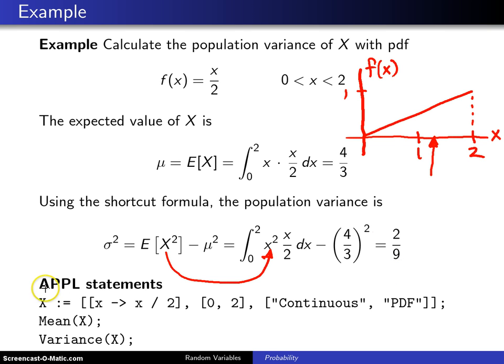The mean and the variance can be calculated in APPL in the following fashion. Here x is set equal to a list of three lists, and the first list contains the probability density function.